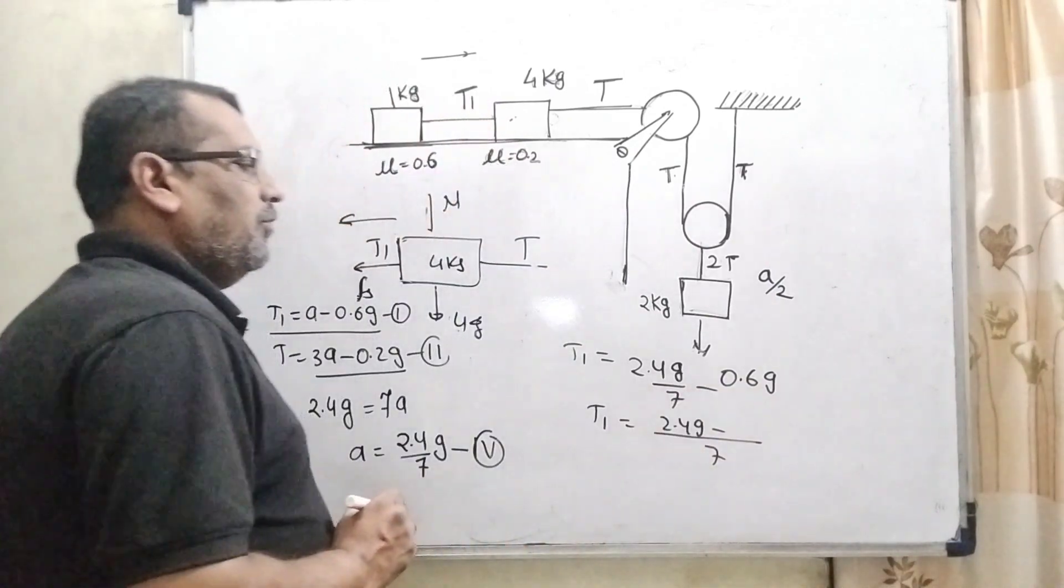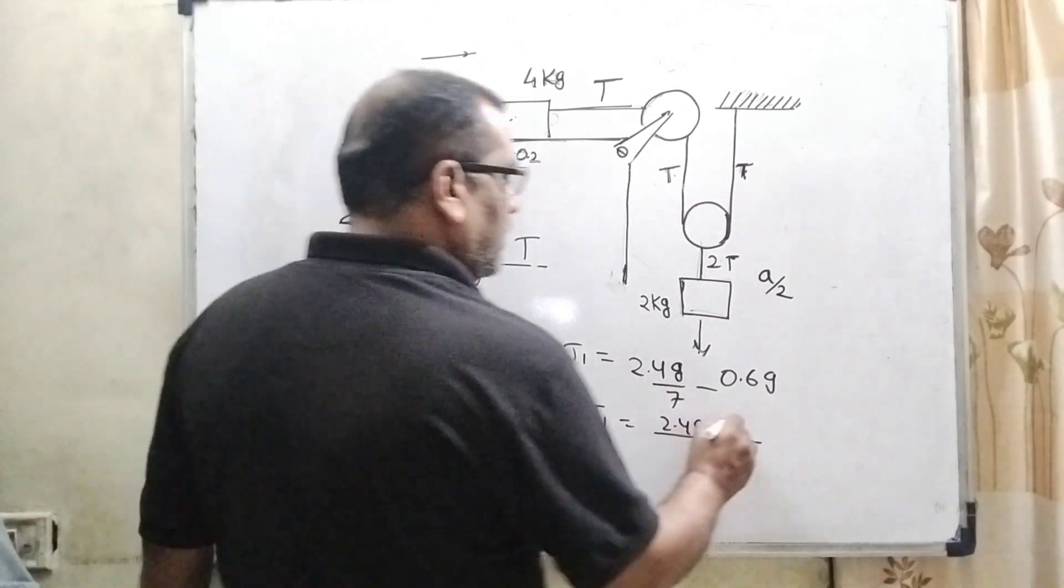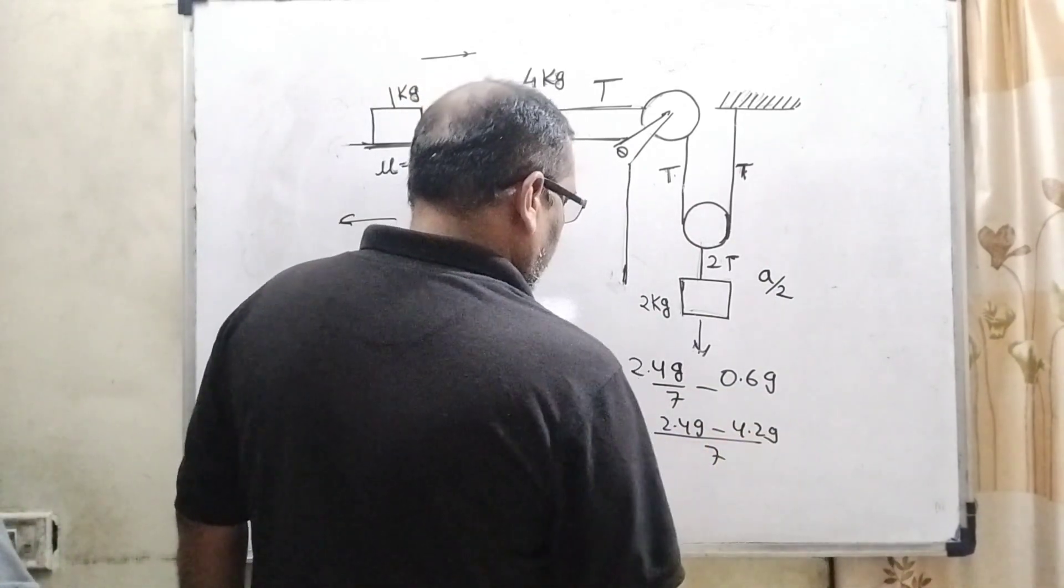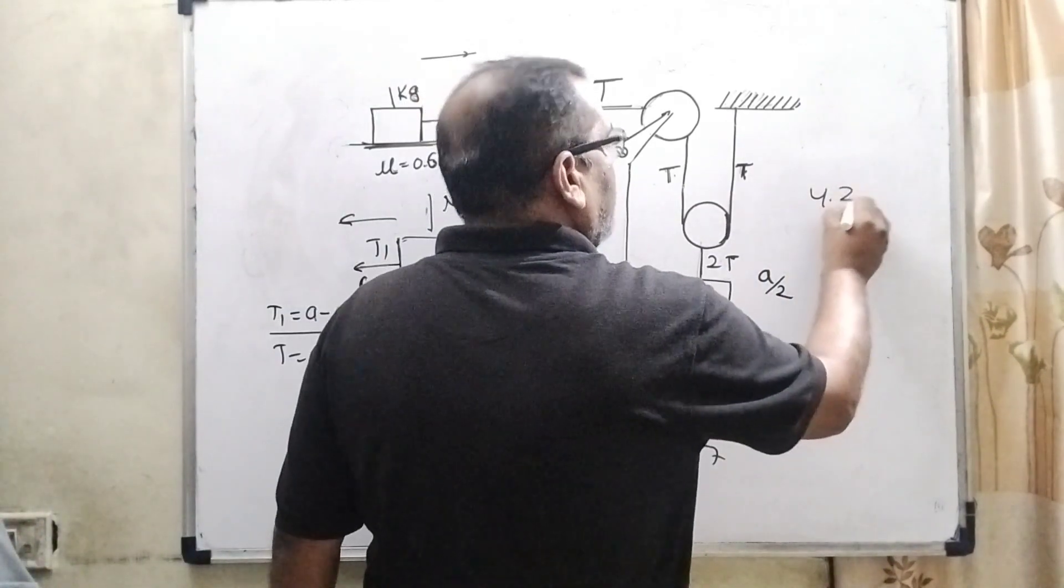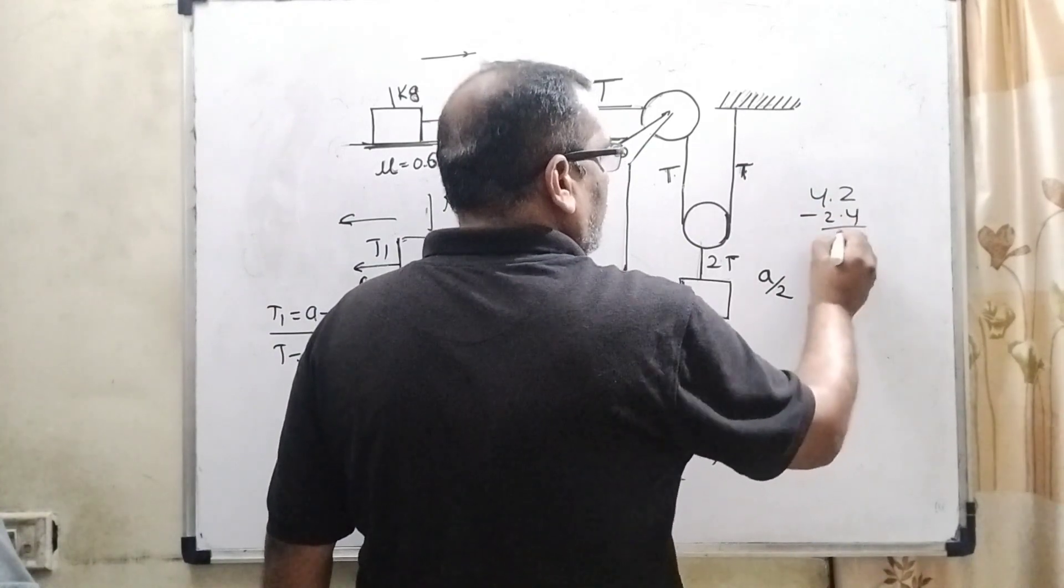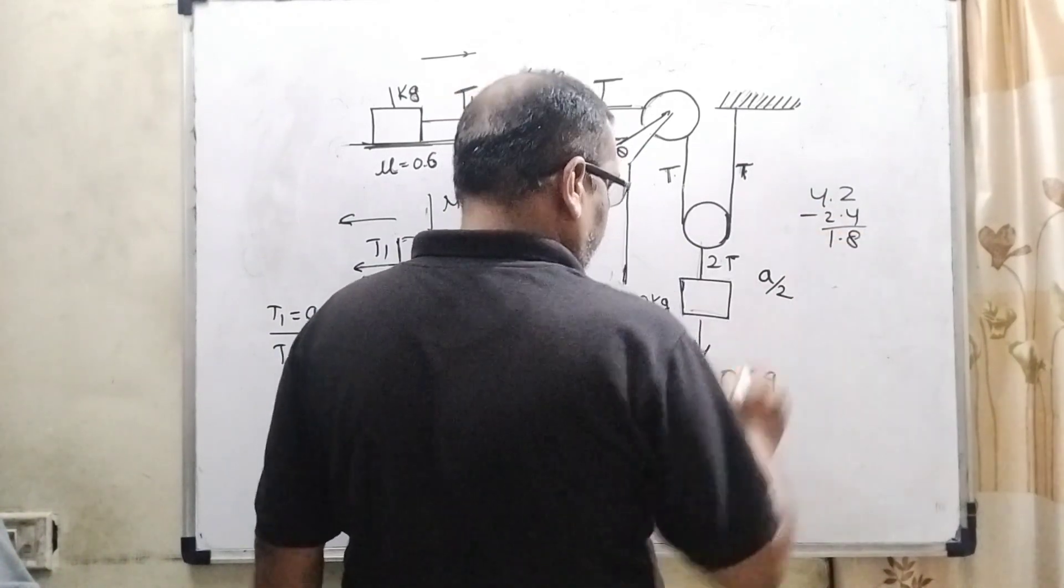2 means 4.2 G. Okay, here minus, what is the value of 4.2 minus 2.4? That is 8, 1.8.